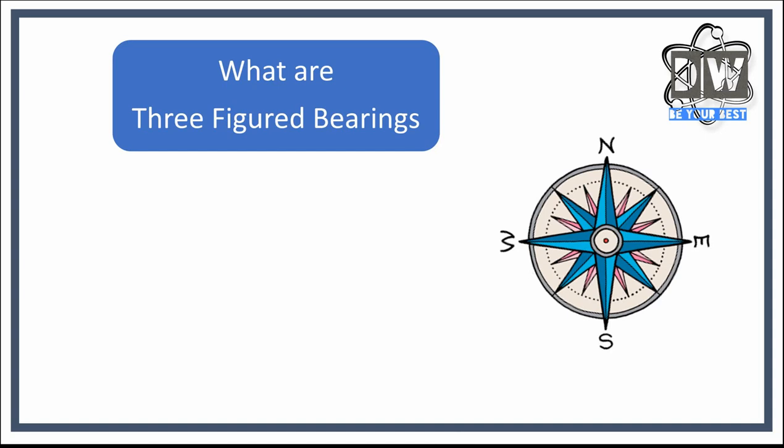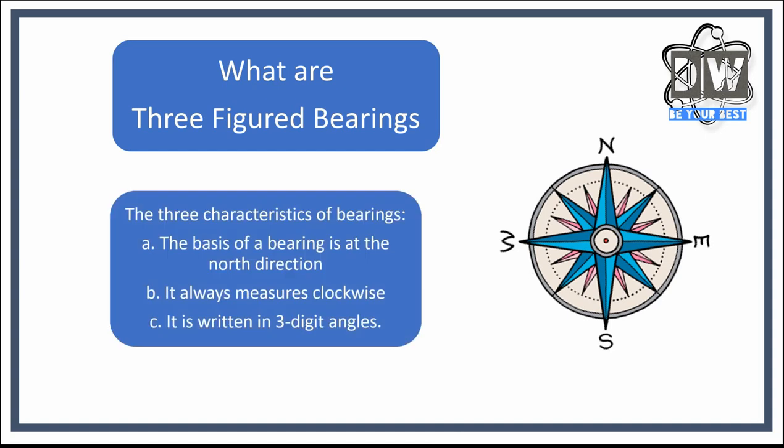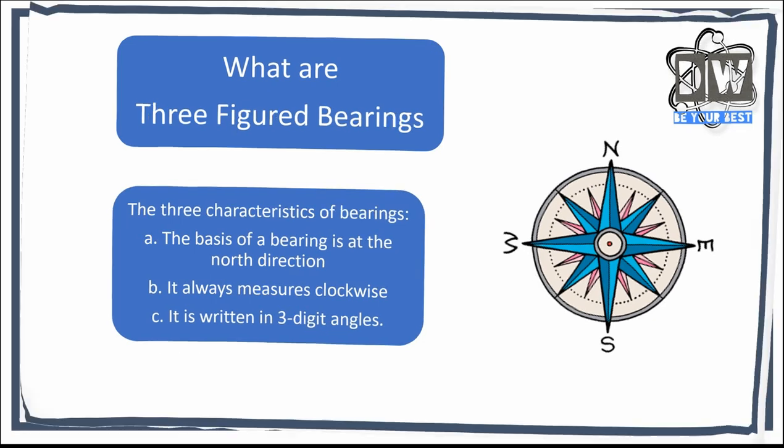The characteristics of bearings: a) the basis of a bearing is that we start at the north direction, b) it's always measured clockwise—that's very important—so it's always measured in this direction, and c) it's written as a three-digit angle. That's also really important, hence the three-figured bearings part to it.